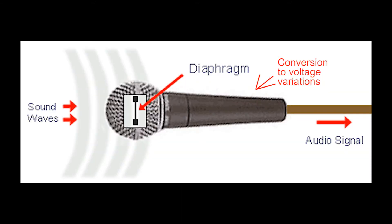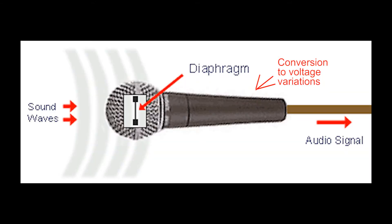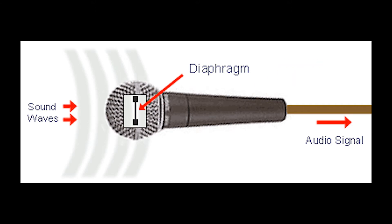A microphone is an input transducer that converts sound — which are vibrations in the air — into voltage variations when those vibrations are picked up by the microphone. Microphones are mainly used to either record or amplify the sounds in the air that are being picked up by the microphone.